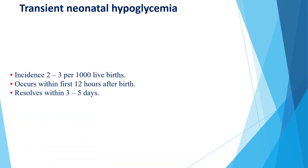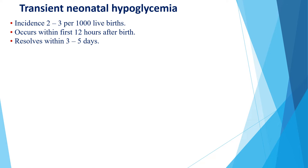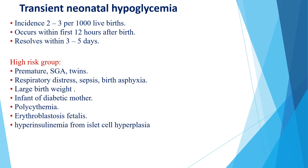Transient neonatal hypoglycemia is very common, with an incidence of around 2 to 3 per 1000 live births. It occurs within the first 12 hours after birth and is transient, resolving within 3 to 5 days. High risk groups include premature infants, small for gestational age, twins, those with respiratory distress, sepsis, birth asphyxia, large birth weight, infant of diabetic mother, polycythemia, erythroblastosis fetalis, and hyperinsulinemia from islet cell hyperplasia.